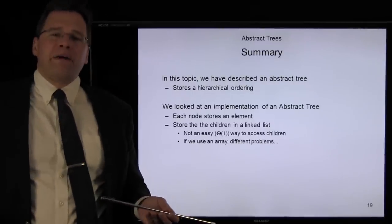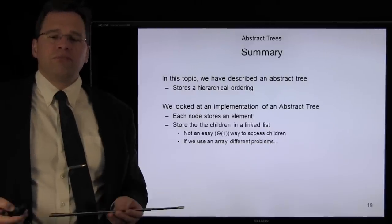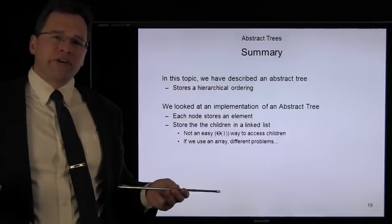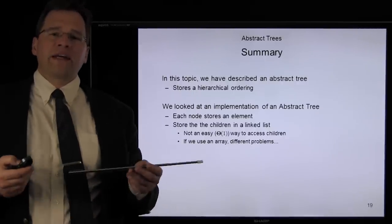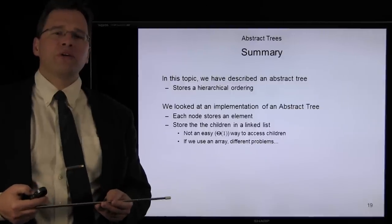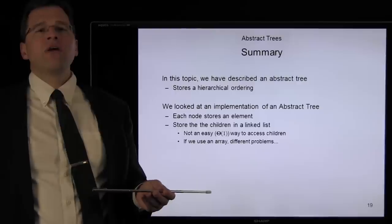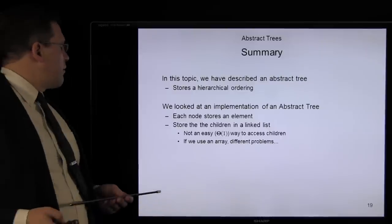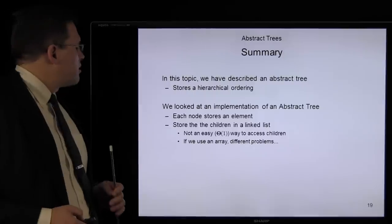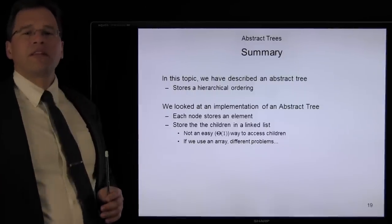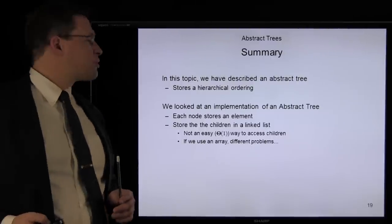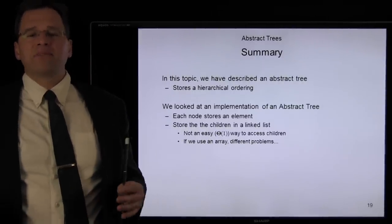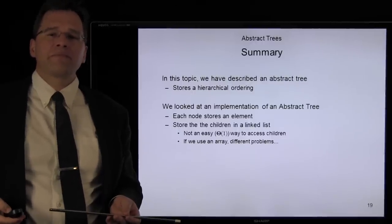In this topic we've described an abstract tree — an abstract data type for storing hierarchical ordering. Given a hierarchical ordering, the operations include accessing the root node, finding a node's parent, accessing children, and attaching or detaching subtrees. The implementation stores elements in nodes with children kept as a linked list of pointers. Using a linked list makes nth-node access slow, while using an array raises issues with maximum size. Thank you very much, and have a good day.